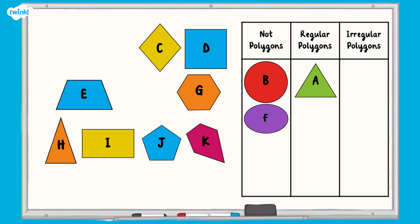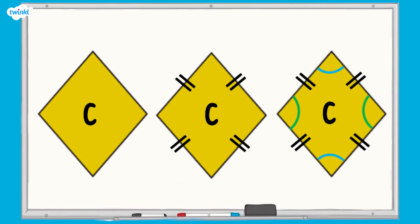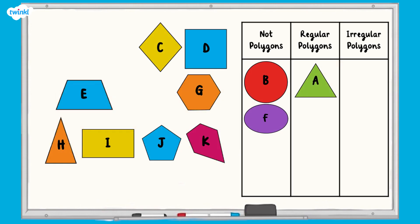Shape C is a quadrilateral. All four of its sides are the same length. Its opposite interior angles are equal, but all four angles are not the same size. This means that it is an irregular polygon. A quadrilateral with equal length sides and diagonally opposite angles equal is called a rhombus. We can move shape C into the irregular polygon column.